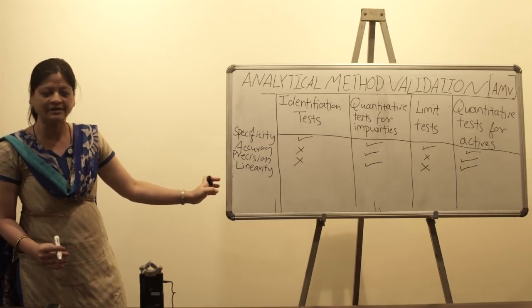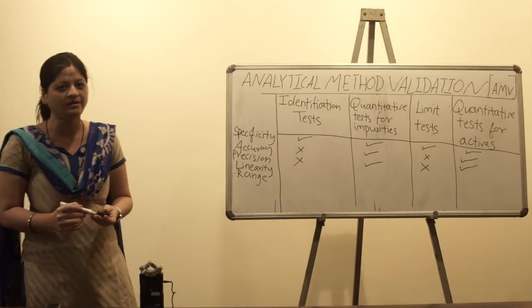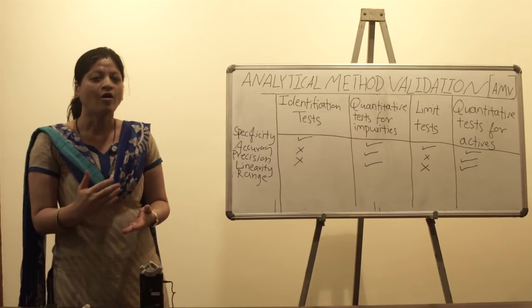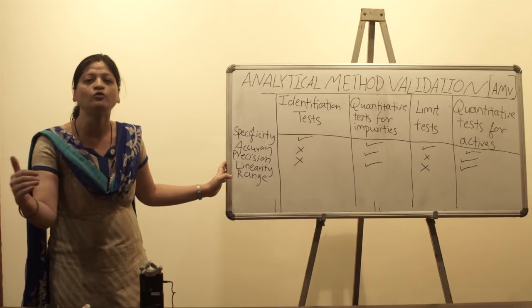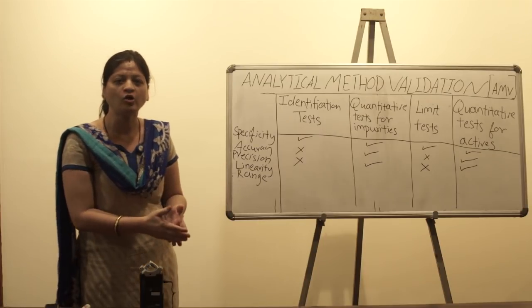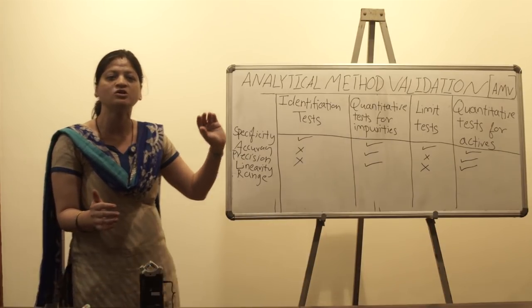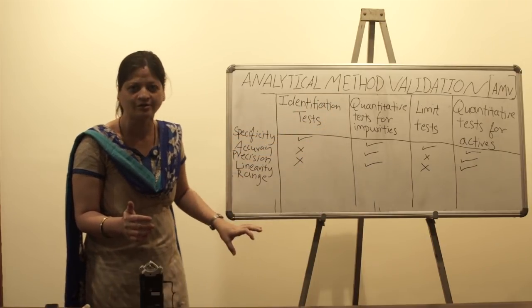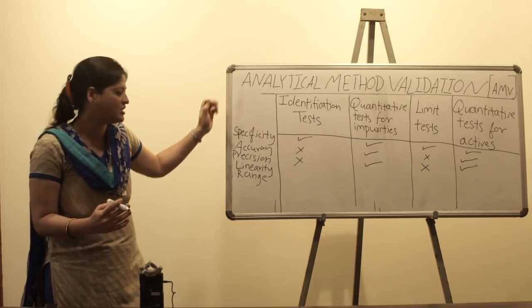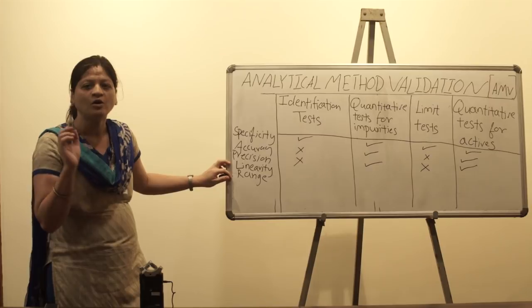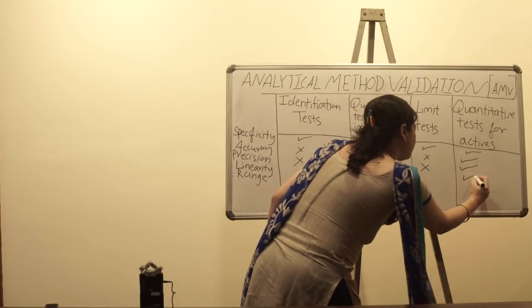Range goes hand in hand with linearity as the fifth parameter. Range is the lowest and highest level of concentration or amount of analyte within which your given analytical method is bound to be linear. This range should cover both the lowest and highest concentrations at which you are determining the presence of that analyte. Linearity and range both need to be performed only for quantitative tests for impurities and quantitative tests for actives — not for identification tests or limit tests.